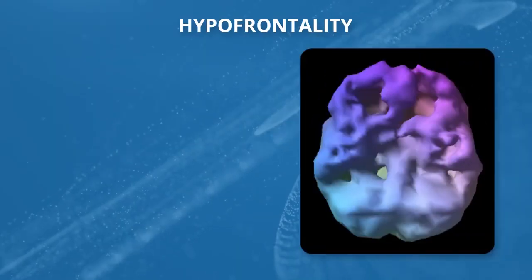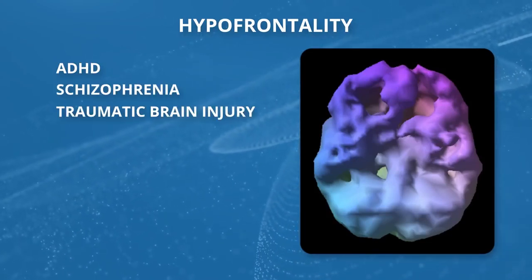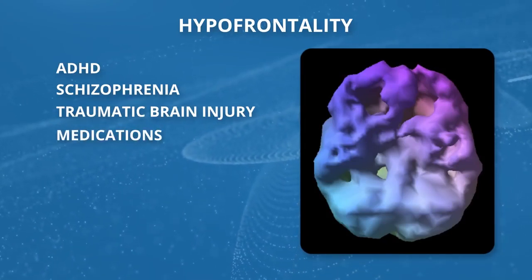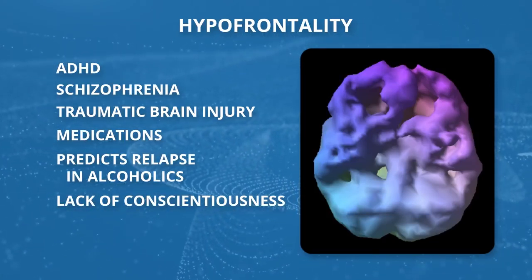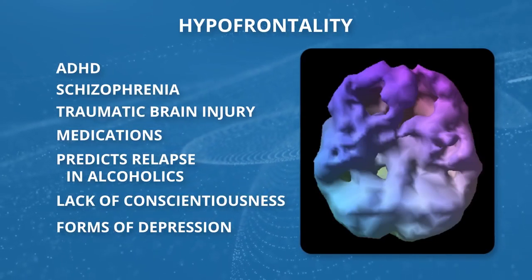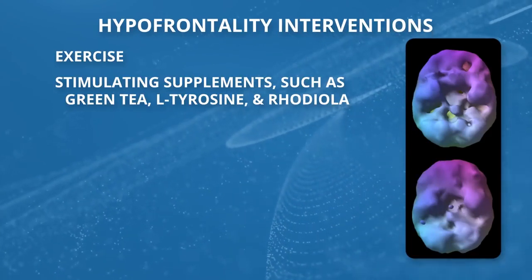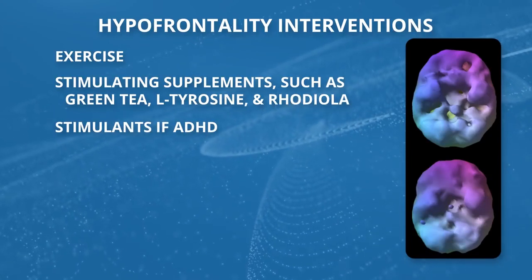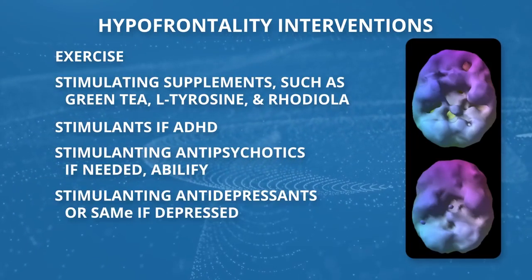So you have hyperfrontality and hypofrontality — low activity in the frontal lobes — classically seen with ADHD, but also schizophrenia, traumatic brain injury, and certain medications. Low frontal lobe activity predicts relapse in alcoholics, and there's a lack of conscientiousness and forward thinking. We also see it in some forms of depression. If it's low, we want to stimulate it with exercise, stimulating supplements such as green tea, L-tyrosine, and rhodiola. We might use a stimulant like Ritalin or Adderall for ADHD, Abilify for a psychotic process, or a stimulating antidepressant for depression.